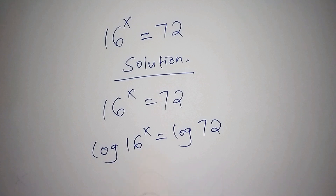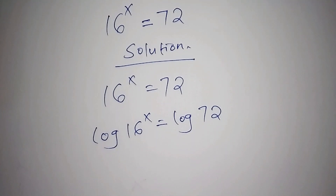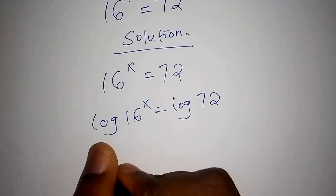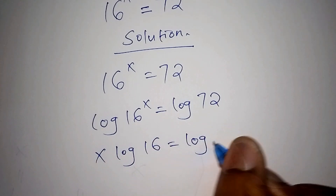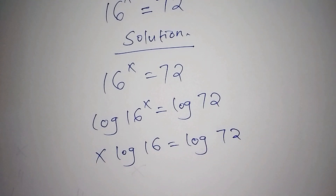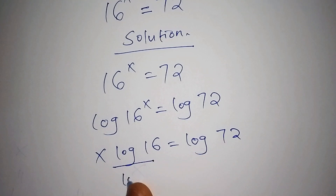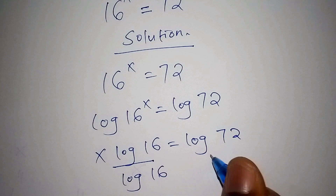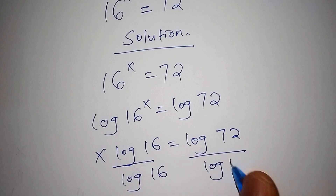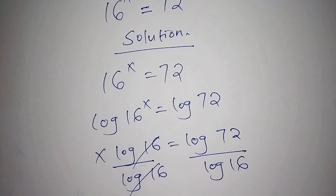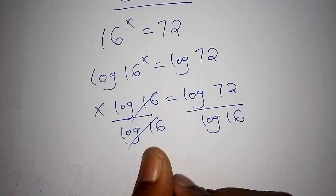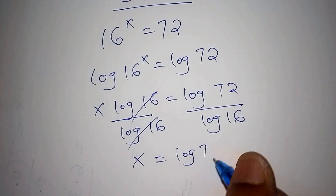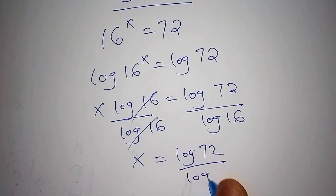The log of 16 to the power of x, according to the law of indices, can also be written as x·log 16 is equals to log 72. From there we isolate x by dividing both sides by log 16. The log 16 and log 16 cancel, so x is equals to log 72 all over log 16.